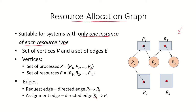RAGs consist of vertices and edges. The vertices are the set of processes P — in this example P1, P2, and P3 — and the set of resources R: R1, R2, R3, and R4.